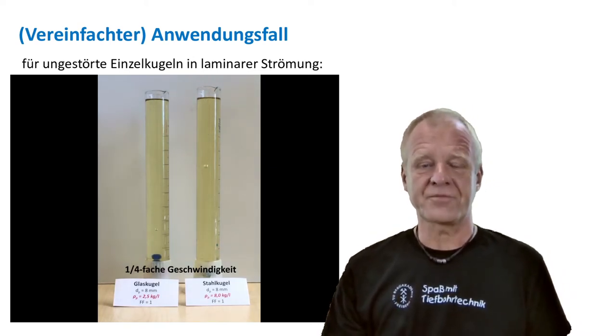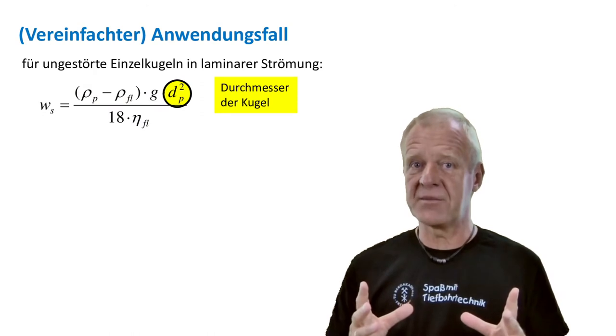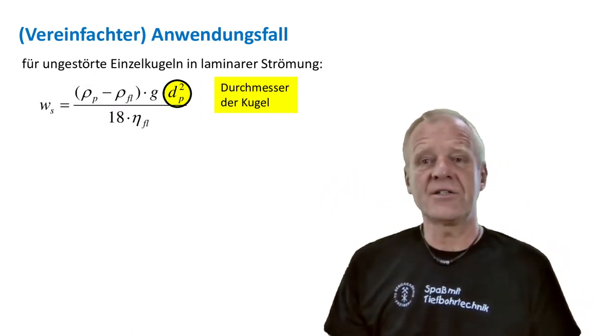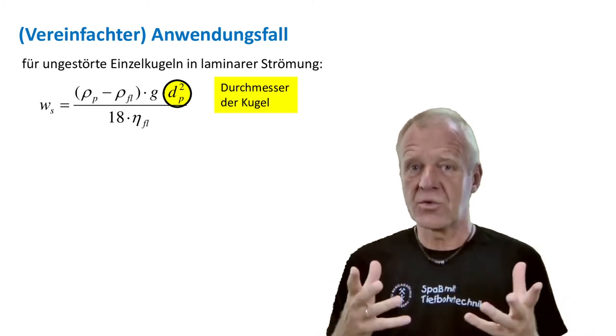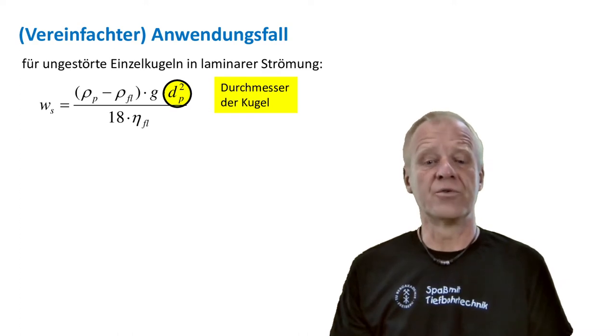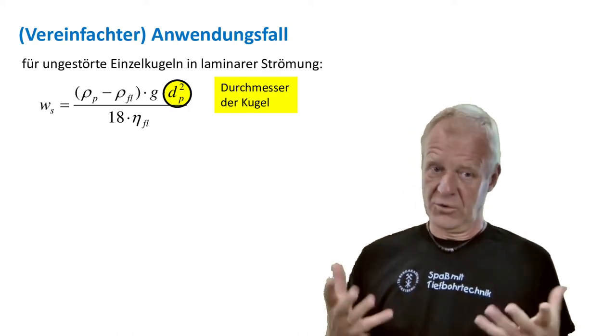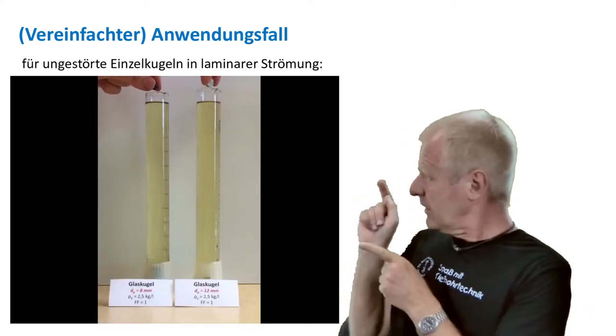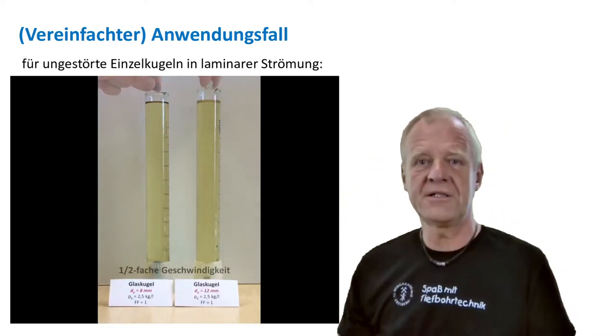Another important parameter is the size of the particle. The diameter of the particle is found in the numerator and it is even squared. This means the particle twice the diameter will sink down four times faster. So the size of the cutting is very crucial to how fast the particle sinks down. Large balls sink faster. You can see that in the experiment.